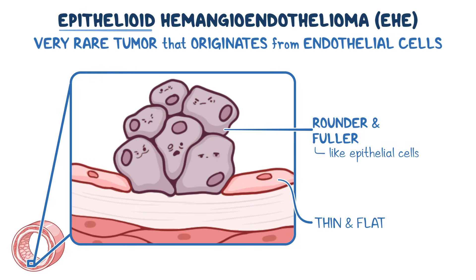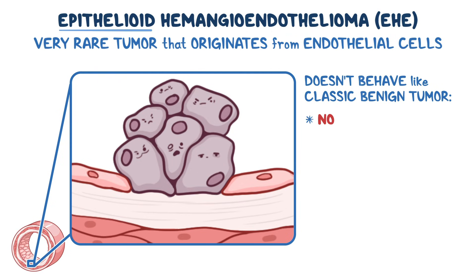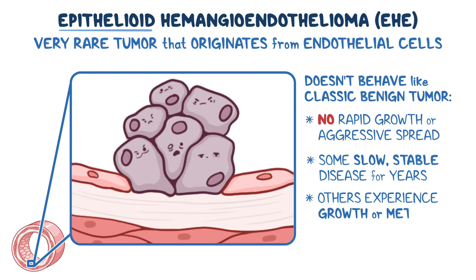What makes EHE unique is that it doesn't behave like a classic benign tumor, but it also doesn't show the rapid growth or aggressive spread of high-grade cancers. Instead, it falls somewhere in between, meaning some people have slow, stable disease for years, while others can experience growth or metastases over time.